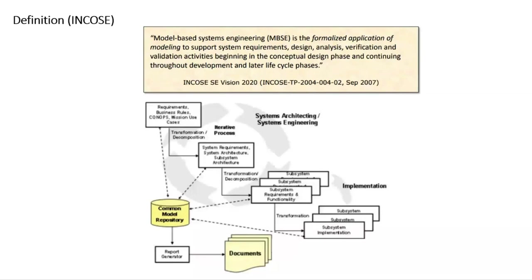Starting with the definition, I use the INCOSE — International Council on Systems Engineering — definition of systems engineering, which is the formalized application of modeling to support system requirements, design analysis, verification and validation activities from concept through design development and later phases. What this means to me is that at every phase of the systems engineering process, your models are really the foundation of the work — not the documents. Documents are generated from the models, and that's a key difference from traditional systems engineering.